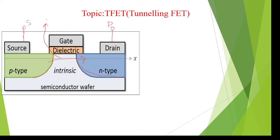The threshold voltage required for T-FET is almost less than 60 millivolts. This means it takes very little time and consumes very little power to flow current from source to drain. That is the main advantage of the tunneling field effect transistor — it consumes very less power, only less than 60 millivolts.